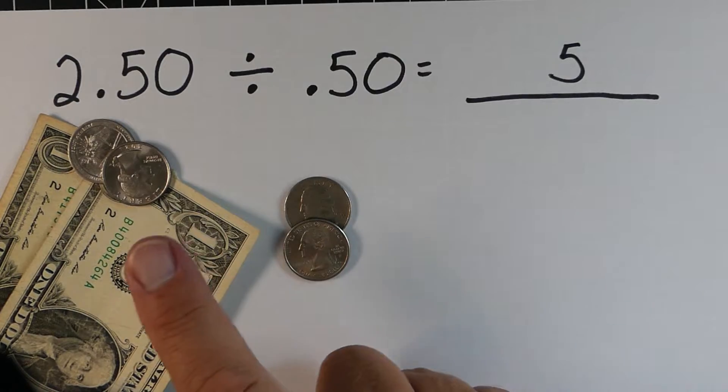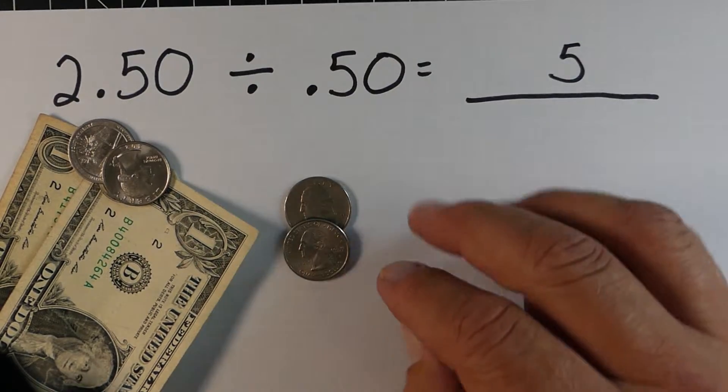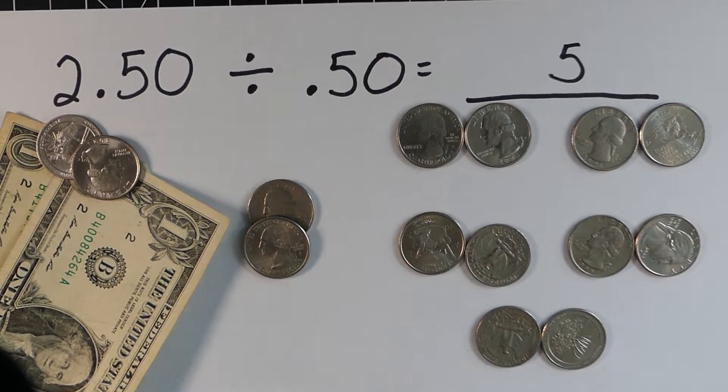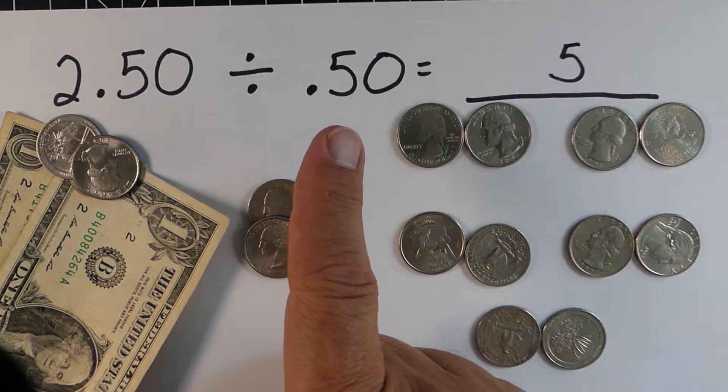So again using our money, let's say we had 2 dollars and 50 cents and we divide it by 50 cents. What would happen is we'd have a total of 5 piles of 50 cents.